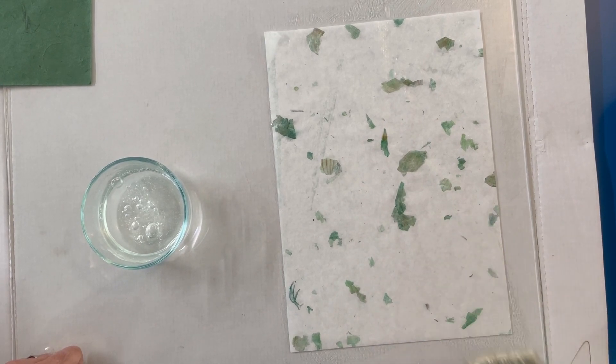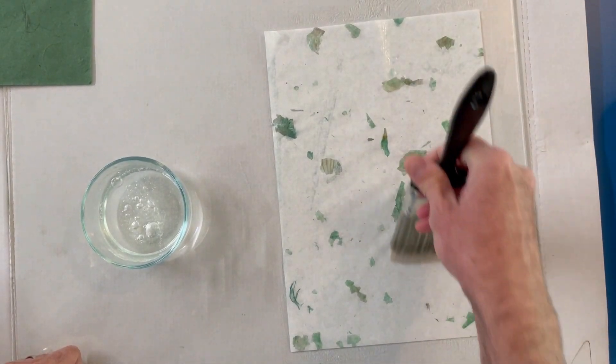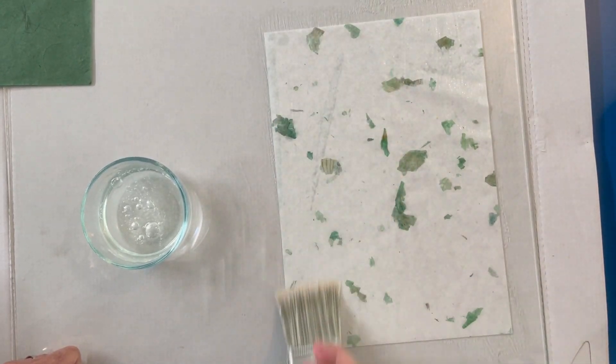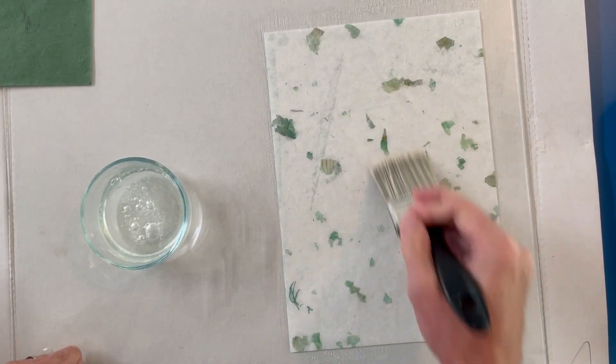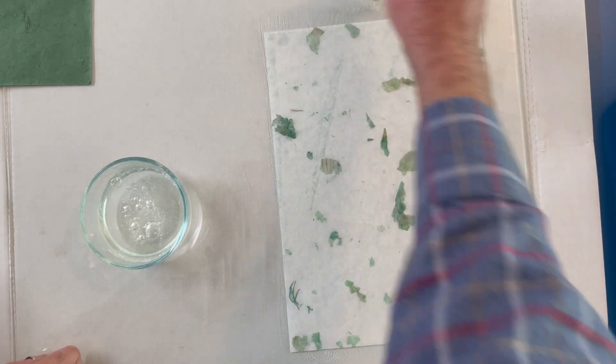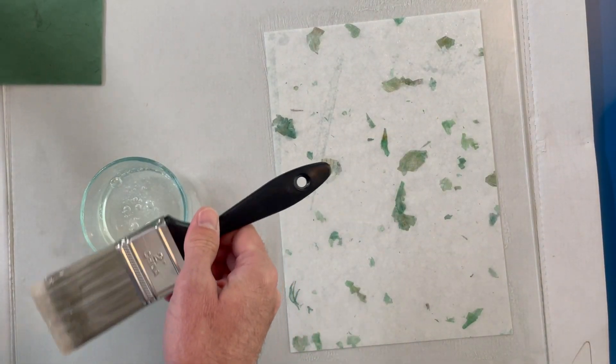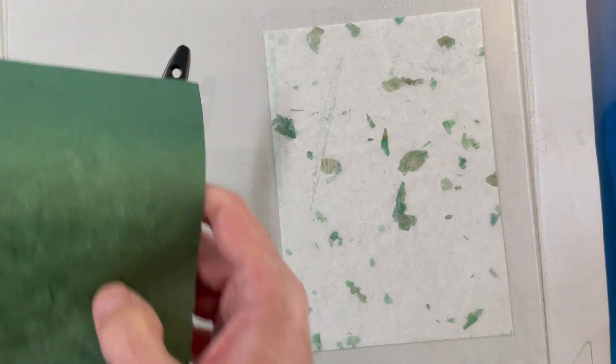I use the brush to try to work out any air bubbles and make sure that the paper is completely flat and smooth on the glass. When the first sheet is thoroughly soaked,